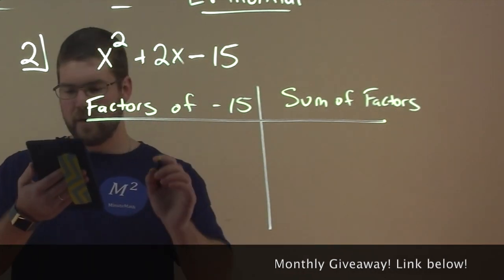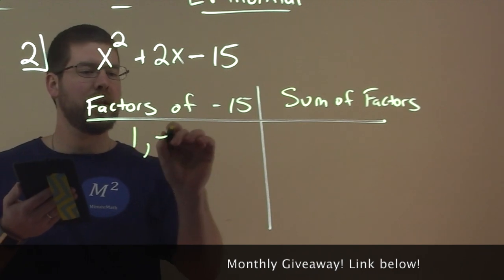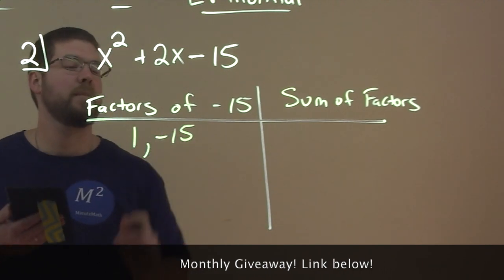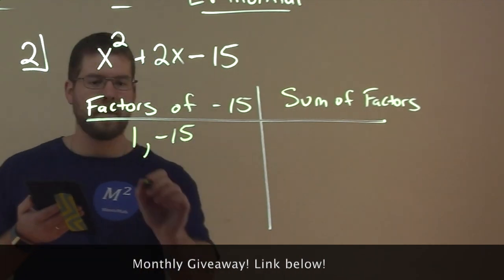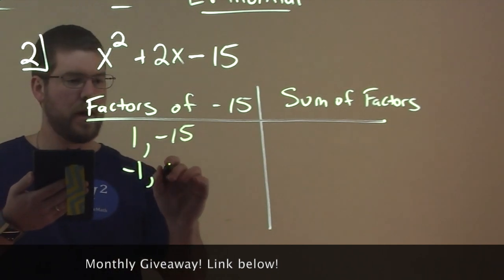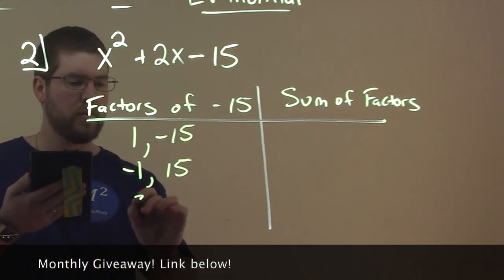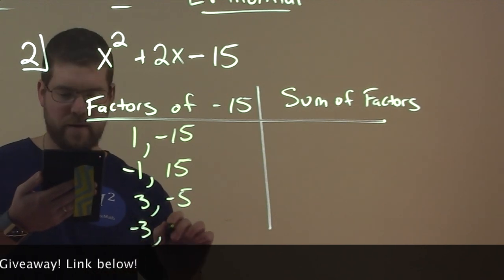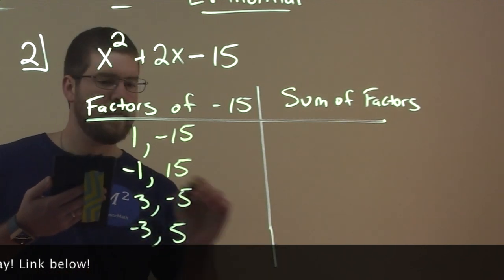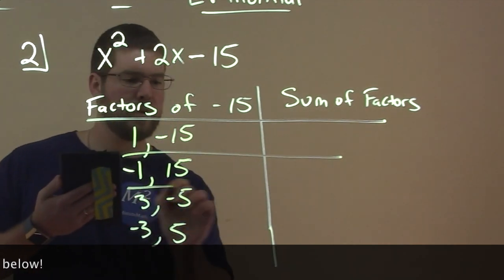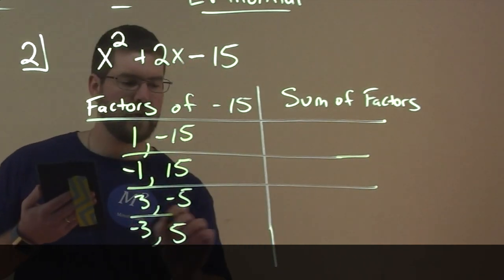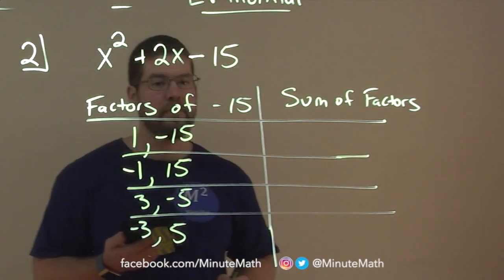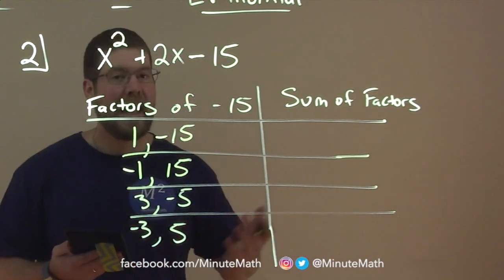So the factors of negative 15: we have 1 and negative 15. 1 times negative 15 is negative 15. We have negative 1 and positive 15, 3 and negative 5, and negative 3 and positive 5. These are all the possibilities of two numbers multiplied that equal negative 15. Now we're going to add them together.